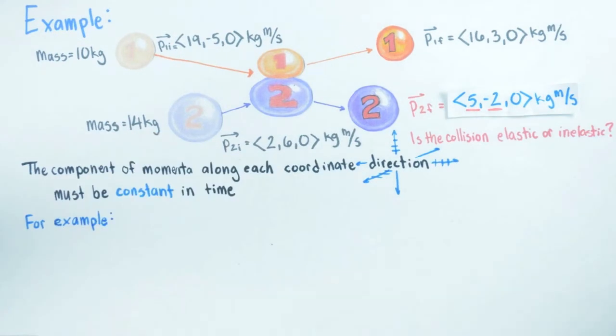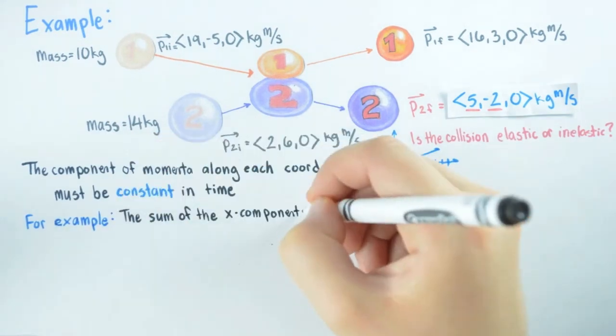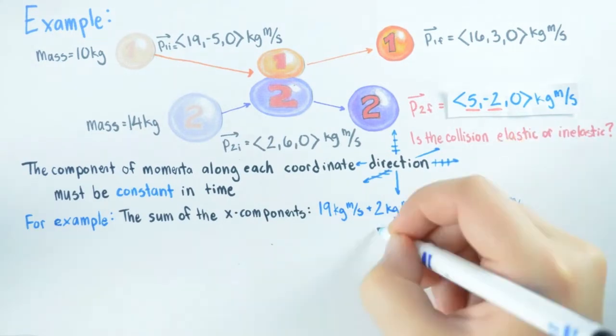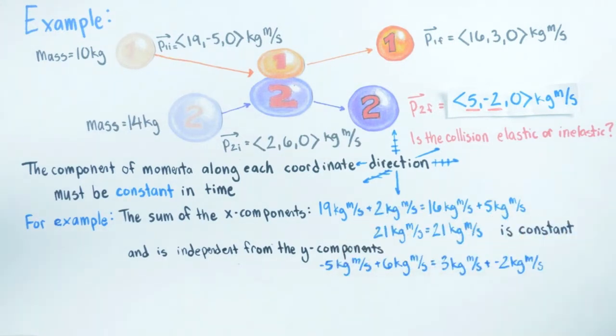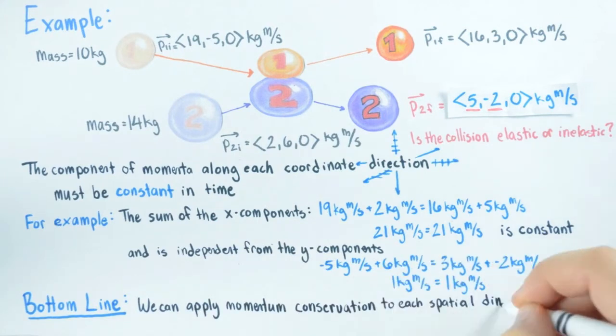For example, the statement that the x component of the system momentum, the sum of the x components of the object's momenta, is constant is a separate statement independent from the statement saying the y component of the system's momentum, the sum of the y components of the object's momenta, is constant. So bottom line, for each spatial dimension where we can apply momentum conservation, we obtain a condition to allow us to solve for an unknown.